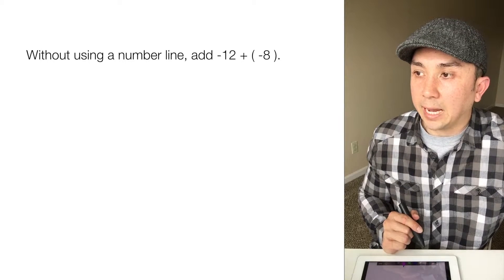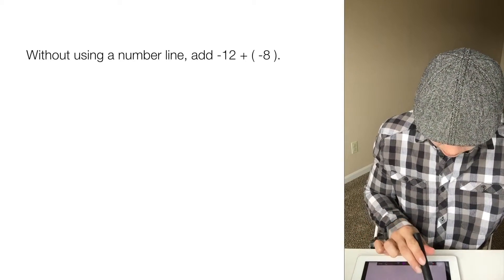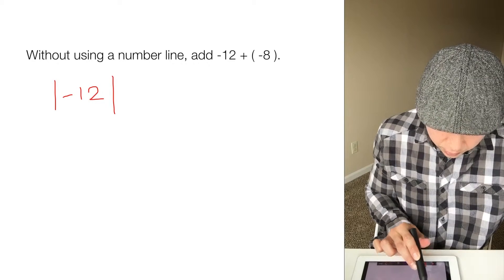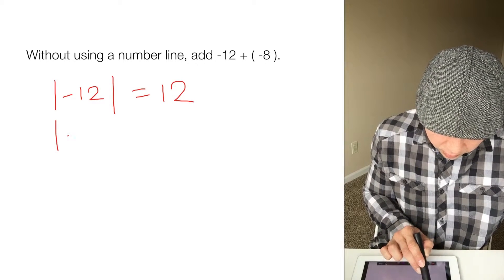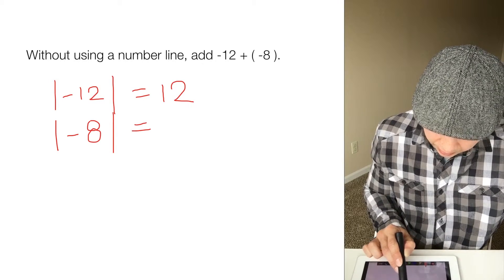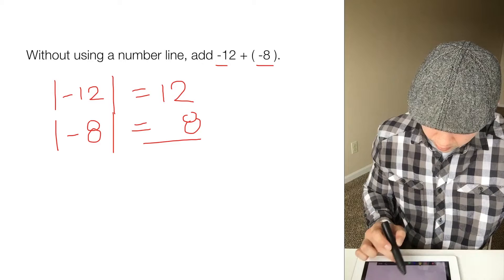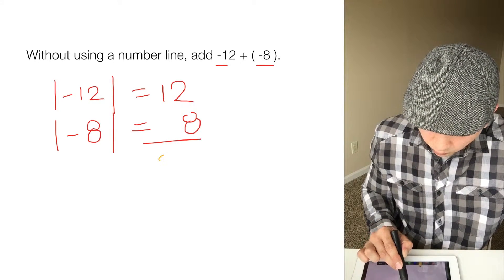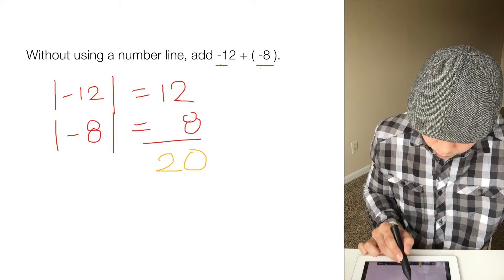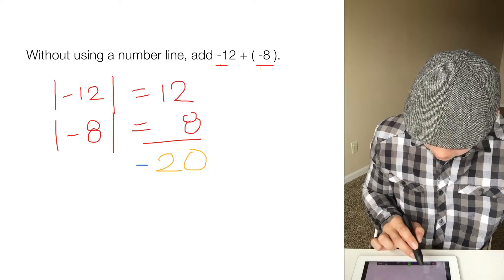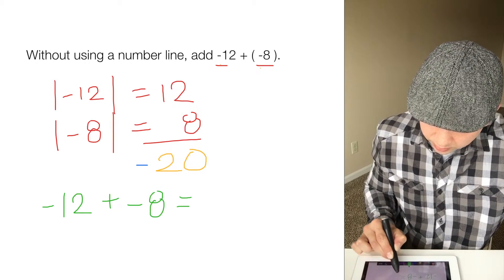So without using a number line, add negative 12 plus negative 8. We take the absolute value of negative 12, which is 12, and the absolute value of negative 8, which is 8. Because these two have the same sign, we add them: 12 plus 8 is 20. We take their common sign, which is negative. So negative 12 plus negative 8 equals negative 20.